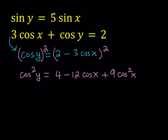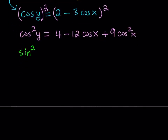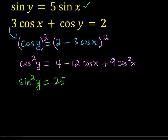Let me go ahead and square the first equation as well. If I square both sides of sine y equals 5 sine x, I get sine squared y equals 25 sine squared x.